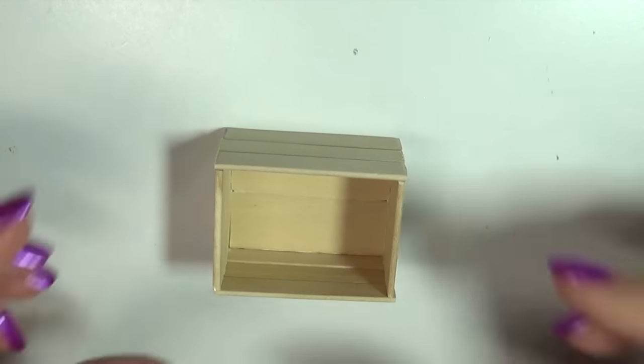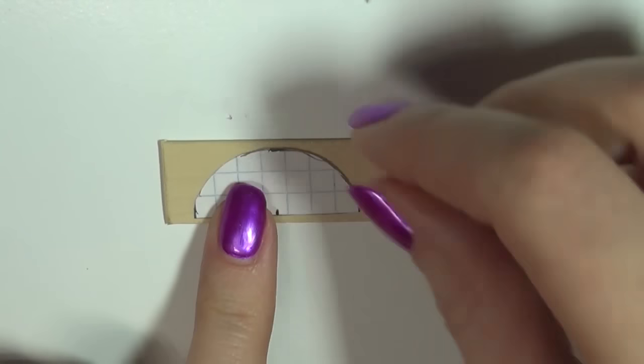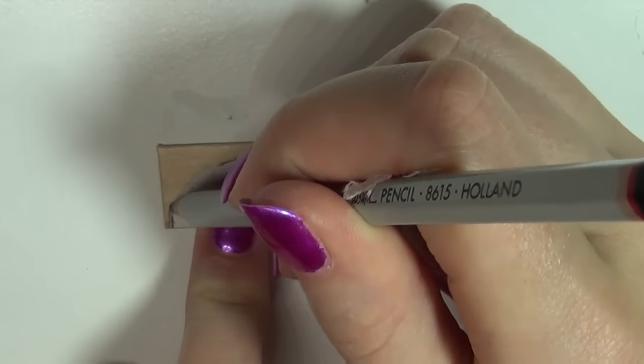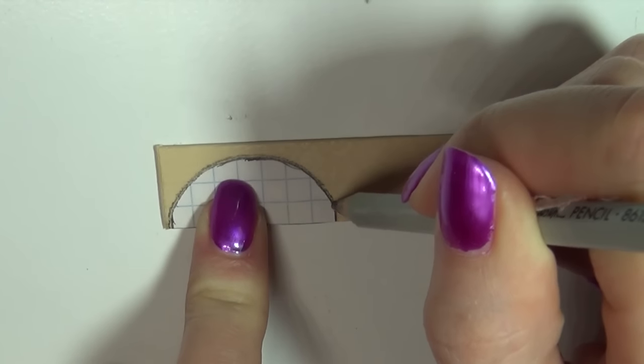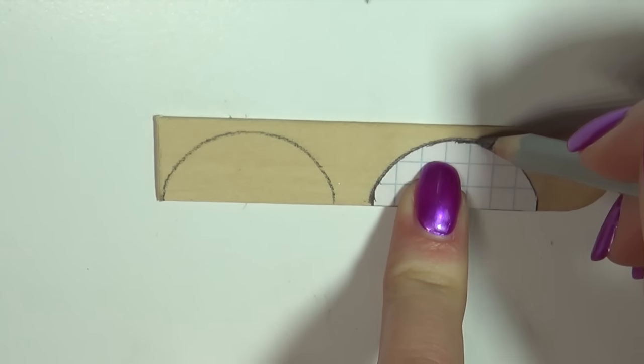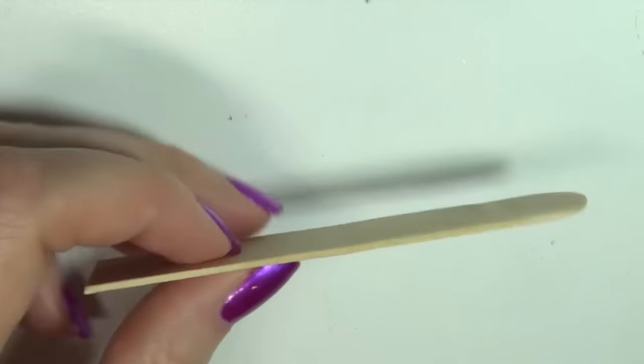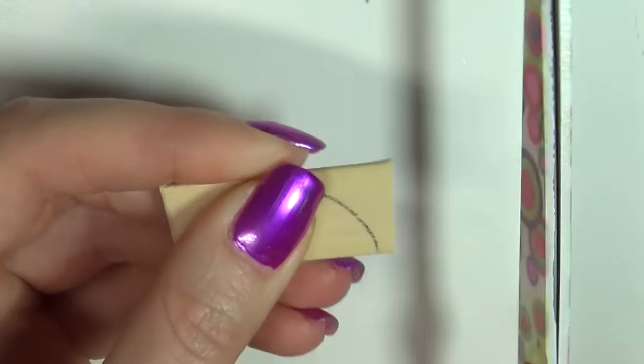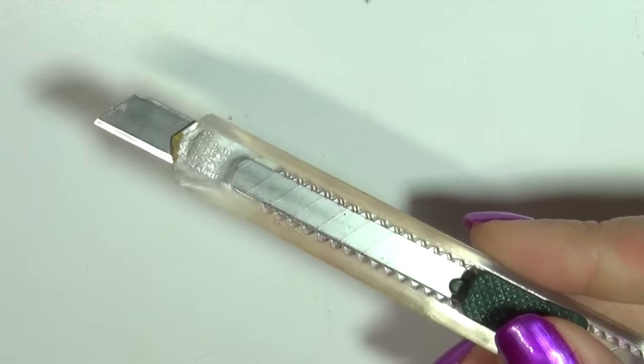Now to make this going from a box to a chest we need to make a lid. I'm taking one of the wider popsicle sticks and drawing on two half circles. Then I'm using a craft knife to cut them out.